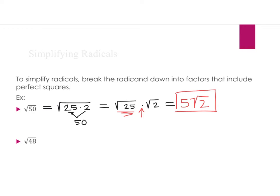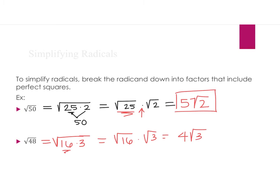Likewise, for the square root of 48, I can break it down into the square root of 16 times 3. I could break it down into 2 and 24, but neither of those are perfect squares. So I went with 16 and 3, because 16 is a perfect square. This becomes the square root of 16 times the square root of 3. The square root of 16 simplifies to 4, and since I can't simplify the square root of 3 anymore, my final answer is 4 square roots of 3.